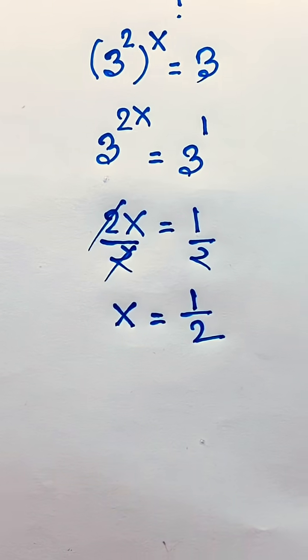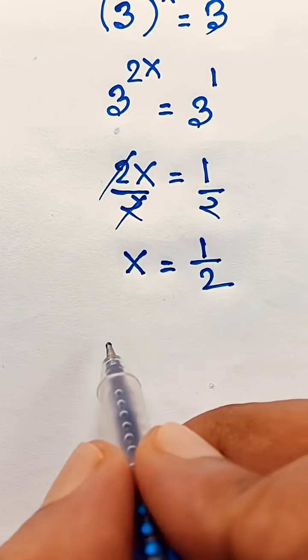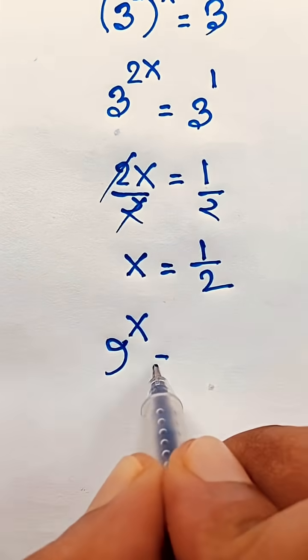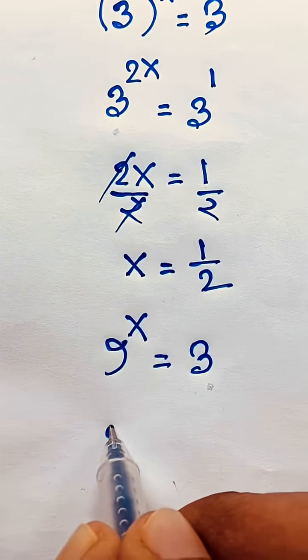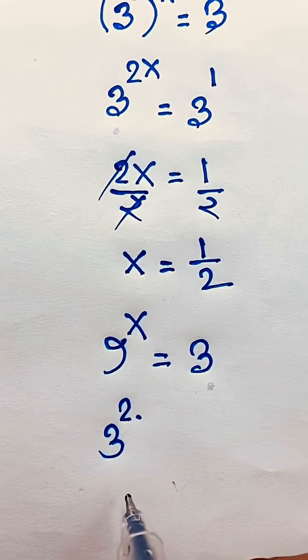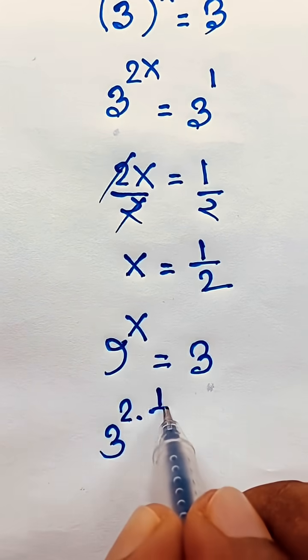This is our final answer in this exponential math problem. So 9 to the power x, it will be 3, so 9, it will be 3 to the power 2, and x is 1 over 2.